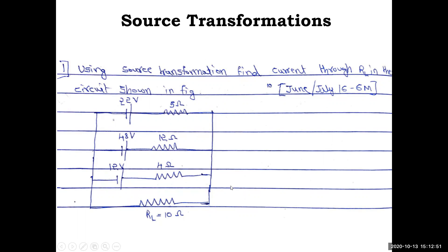To find the current through RL we require a simplified network. Using the given network we cannot do much directly. We could apply KCL, but the problem specifically says to use source transformation. Parallel voltage sources cannot be directly manipulated, so we need to convert each voltage source in series into a current source in parallel.